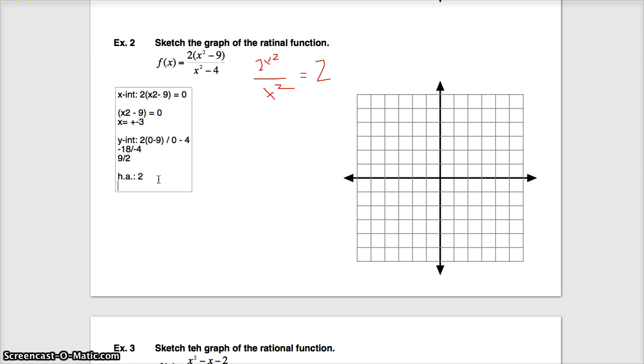And lastly, vertical asymptote. Remember, I set my denominator to 0. This one's a little bit easier. x squared minus 4 equals 0. And then again, I'm looking for numbers that make this statement true. I have a vertical asymptote at positive 2 and negative 2. Now I have all information. I can start drawing.